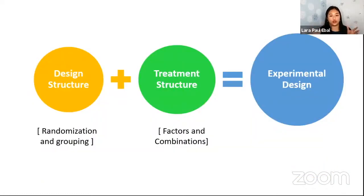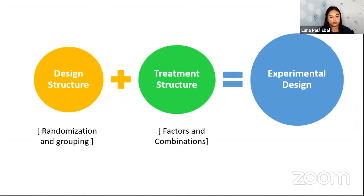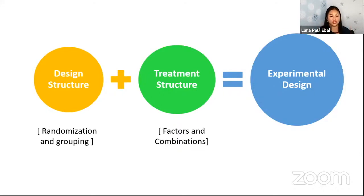Experimental design has two structures. The first is the design structure, and the second is the treatment structure. The design structure covers CRD, RCBD, and LSD — it involves randomization and grouping. The treatment structure involves the factors: the number of factors or the combination of factors that you want to prepare.